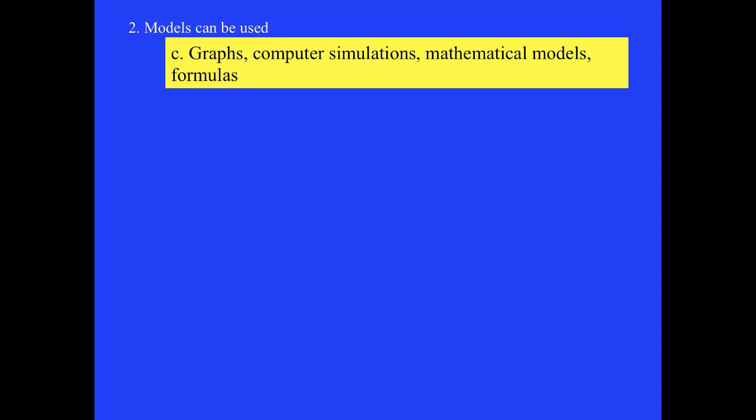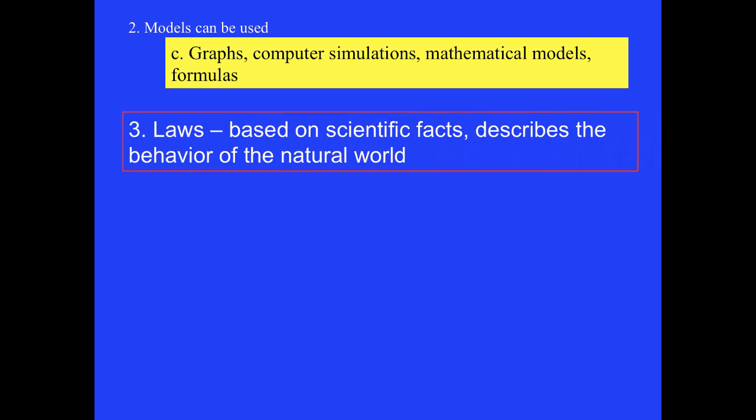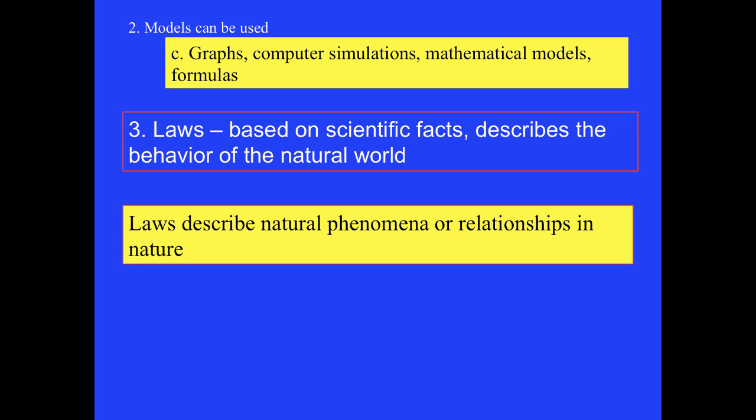In addition to theories, we also use laws to describe the natural world. Laws describe natural phenomena or relationships in nature. Unlike theories, laws are usually short, universally accepted, and without exception. Laws are the building blocks upon which science is built.